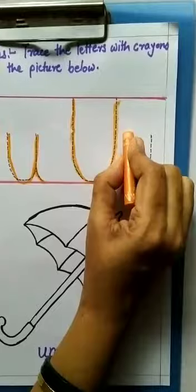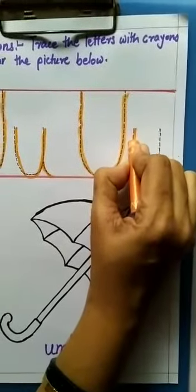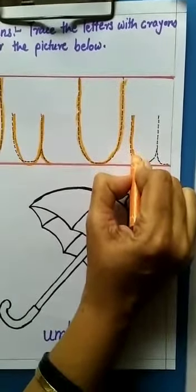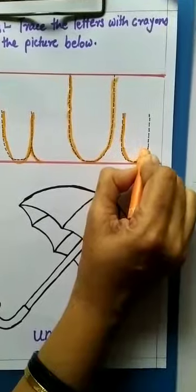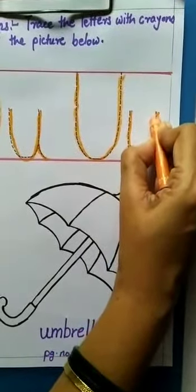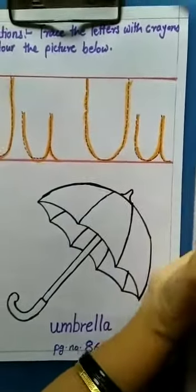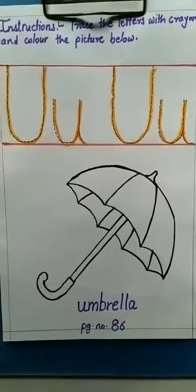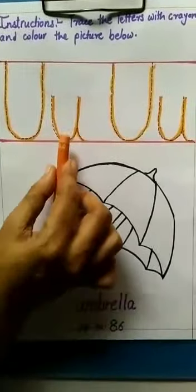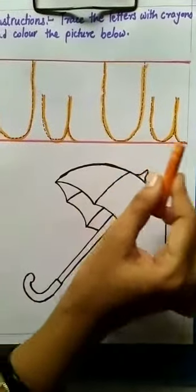And here, I will start. And I will come down. Make a small curve shape. And again, I will go up. And I will come down. And make a small tail. It is a small u. Capital U. Small u. Capital U. Small u.